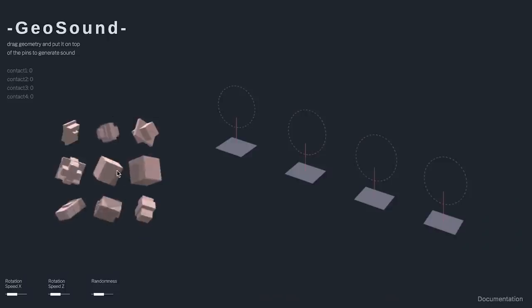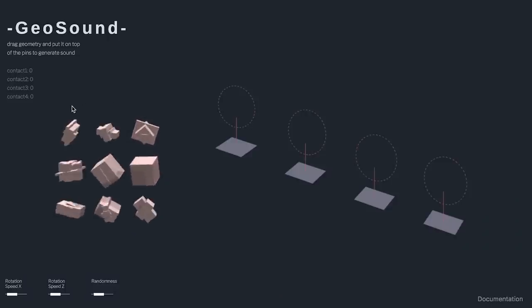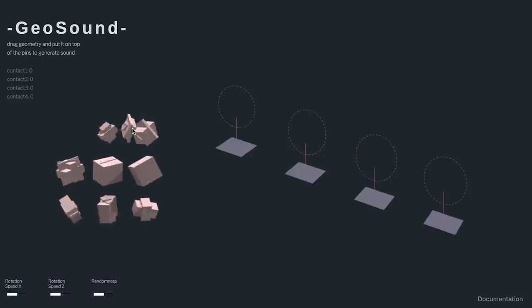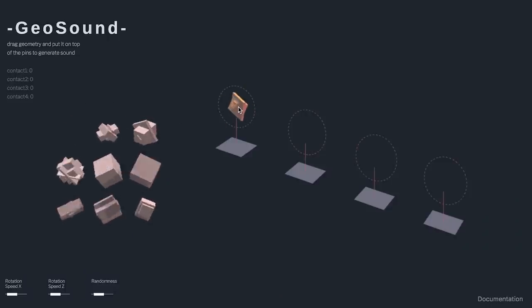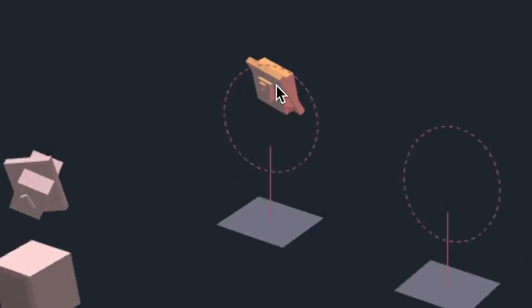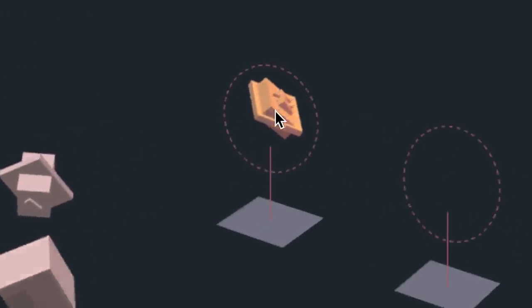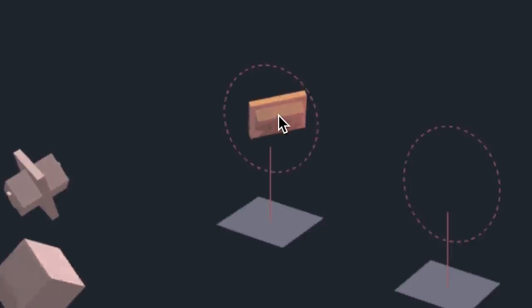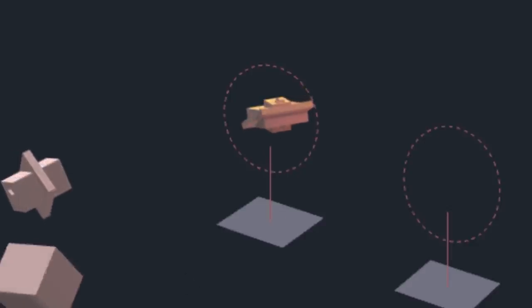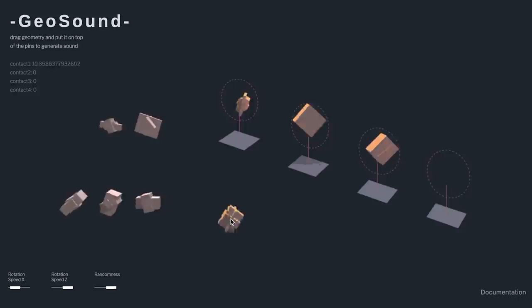That's geosound — a music experiment, kind of. Drag one of the three-dimensional shapes inside one of the four loops. If you place it too high, you won't hear anything, because the sound is made when an edge or corner makes contact with the pole. Listen to this.